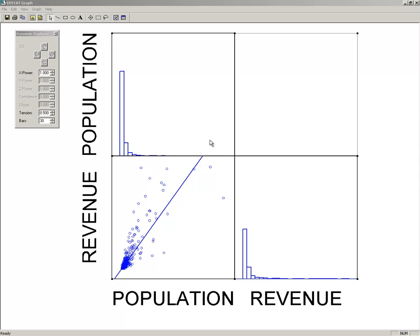What you want is a nice normal distribution across both of these because then your regression numbers will be valid. I've made a little loop here, so I'm going to highlight my data and launch the loop.